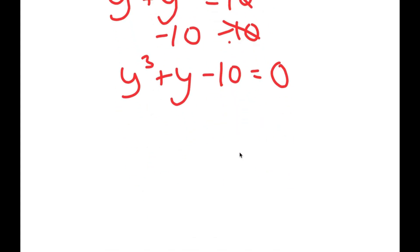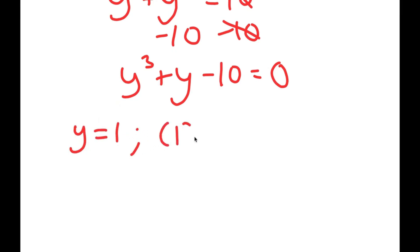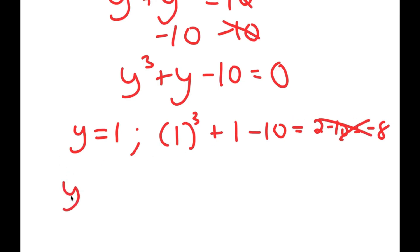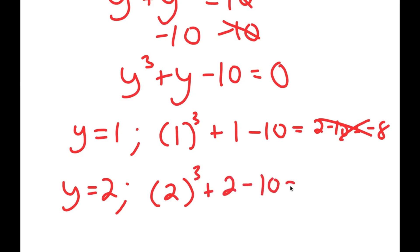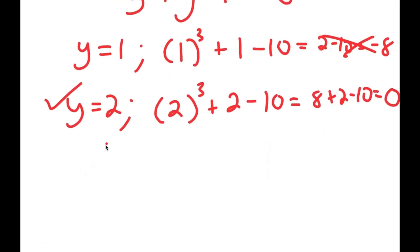To solve this cubic equation, I need to first find one solution by testing values. If y equals 1: 1 to the power of 3 plus 1 minus 10 equals 2 minus 10, which is negative 8 — that's wrong. If y equals 2: 2 to the power of 3 plus 2 minus 10 equals 8 plus 2 minus 10, which equals 0. So y equals 2 is a solution.